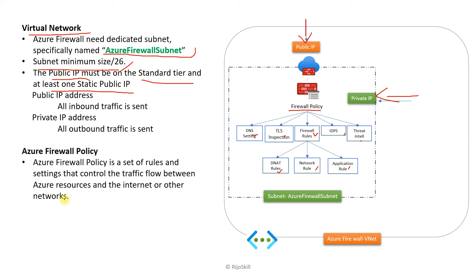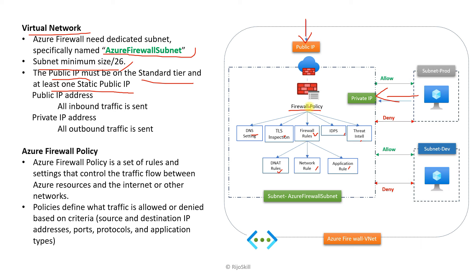The Azure Firewall policy controls the traffic flow between Azure resources and the internet. It handles what traffic is allowed to pass inside the network and what traffic is allowed outside. For example, with subnets like a production subnet and a development subnet, the firewall policy calculates what traffic passes in and out. Policy defines allowed or denied traffic based on source and destination IP address, port, protocol, and application type.